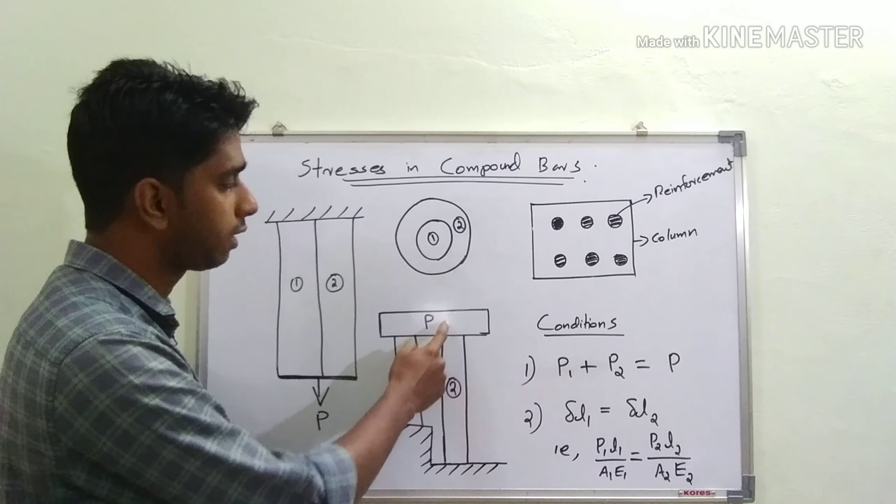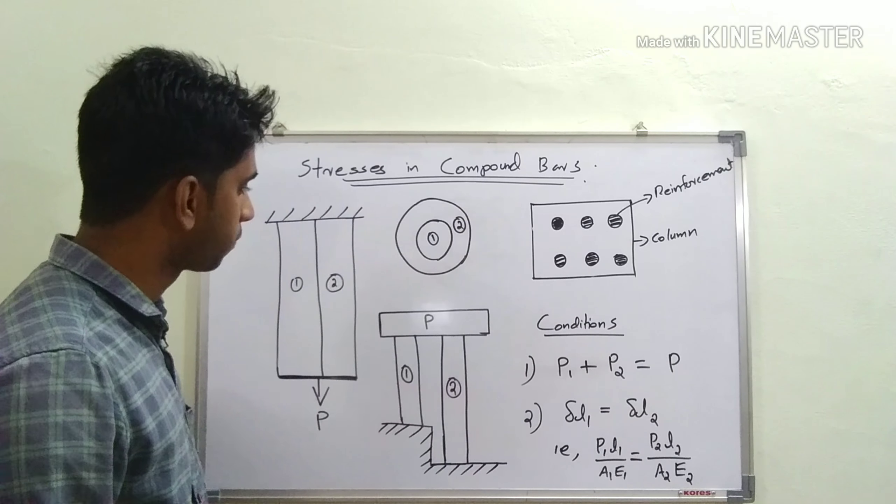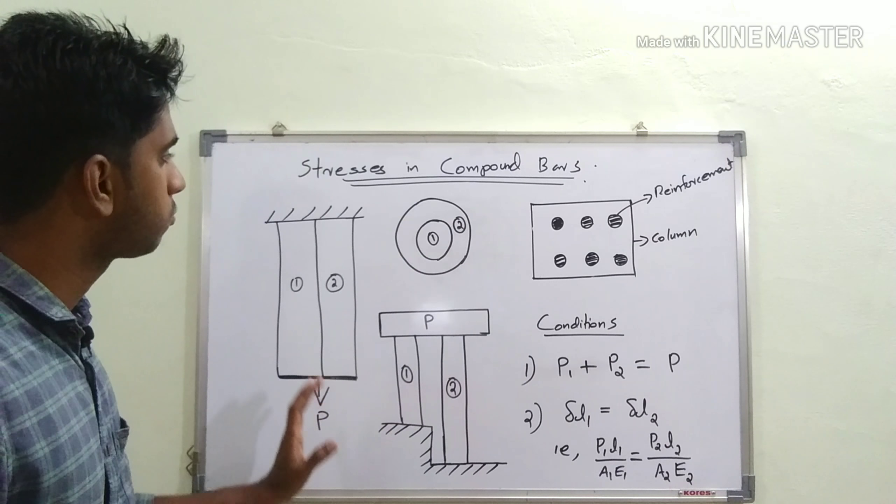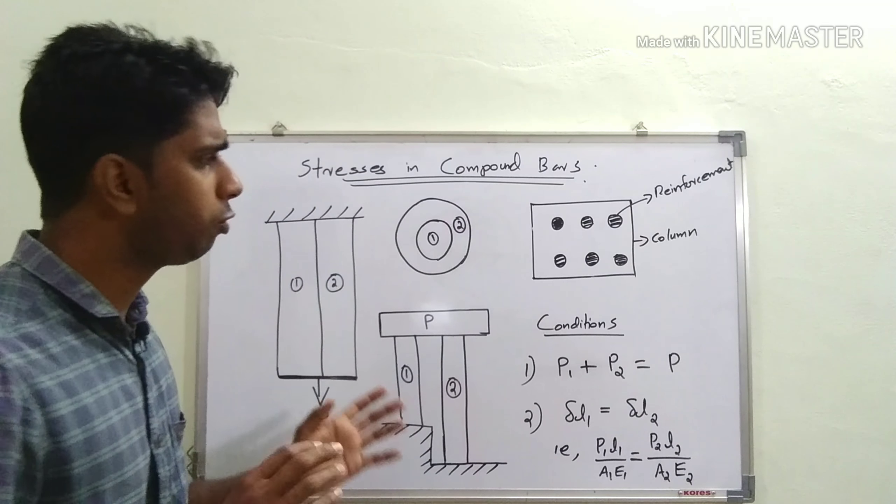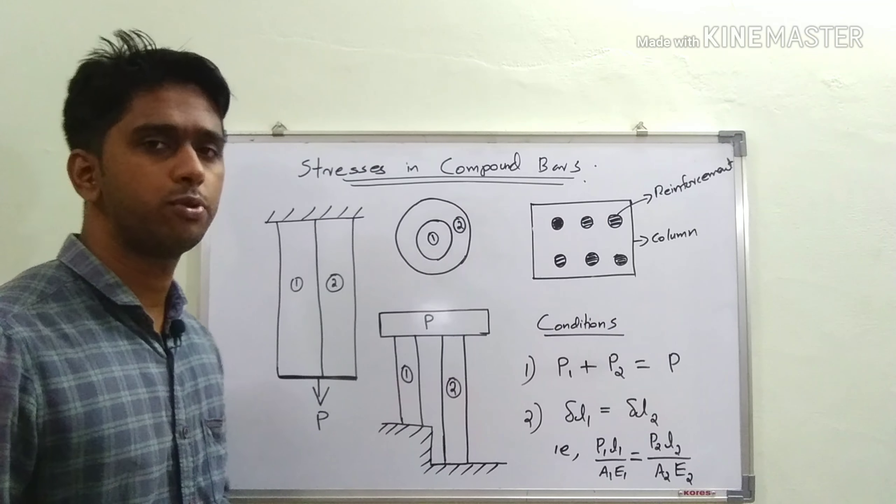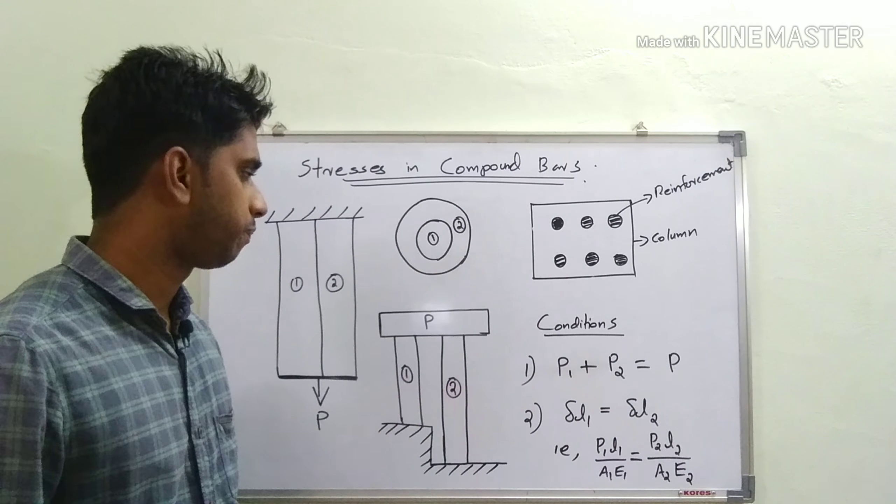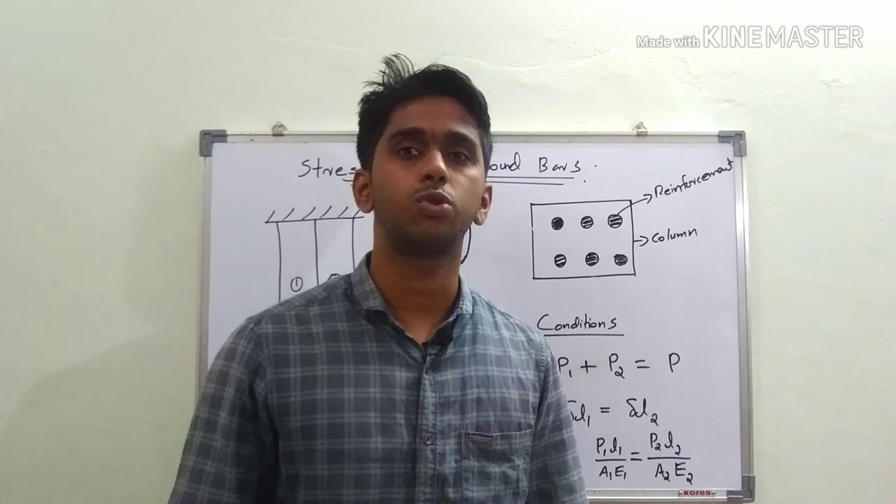The fourth one is similar to this, with the only difference being that both materials have different lengths. Here, instead of a tensile load, a compressive load P is acting. You can expect problems from all these different cases, but we have to deal with them in a similar way.